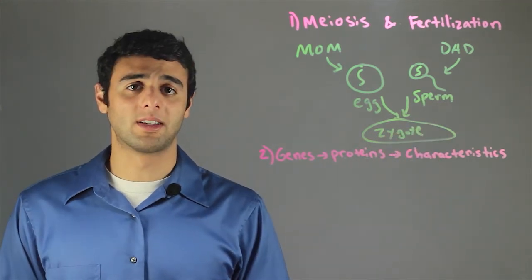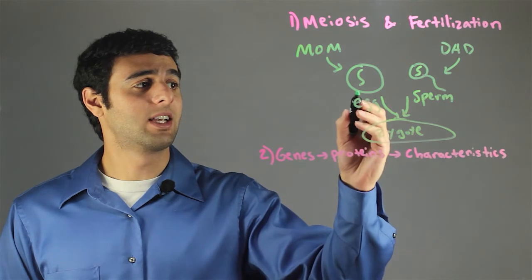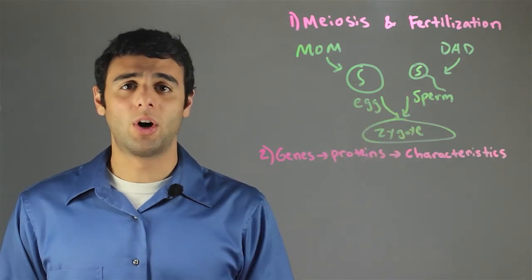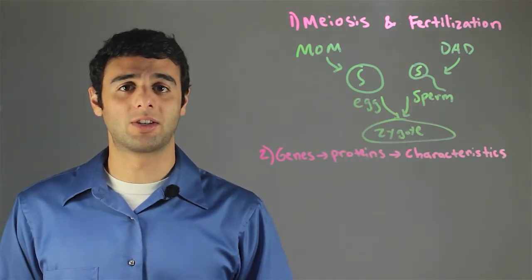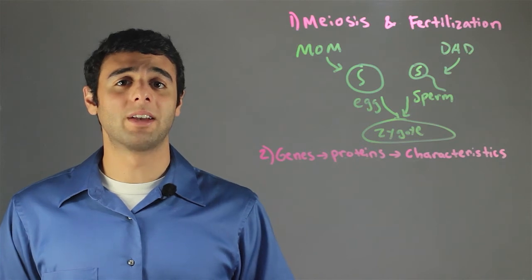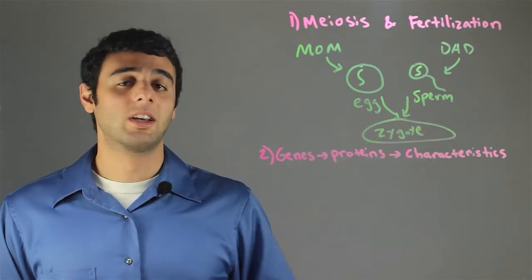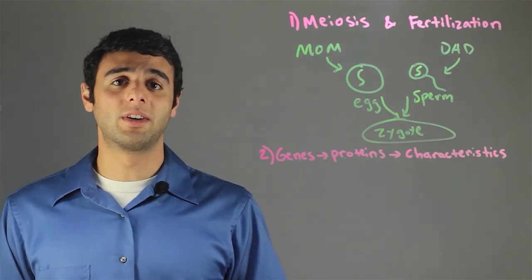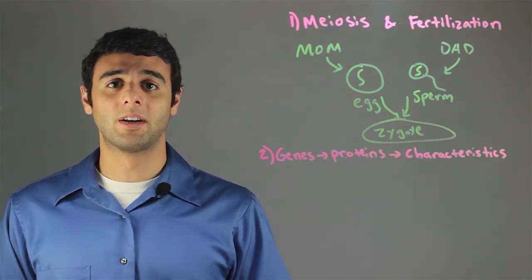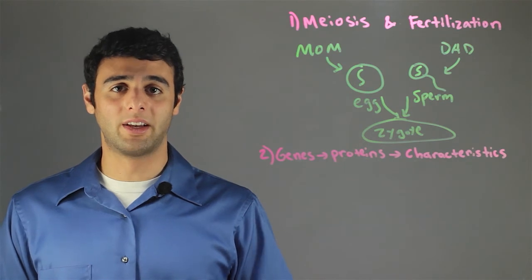In the meiosis process, the eggs and the sperm are all a little bit different from each other. This is a random process, so fertilization is a random event with different genetic probabilities. Each offspring will be slightly different than the other.